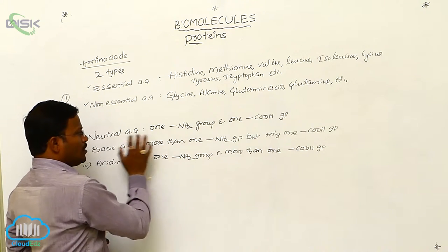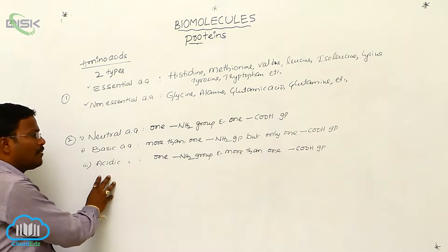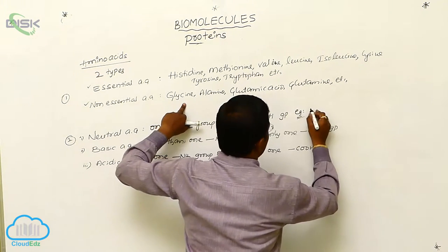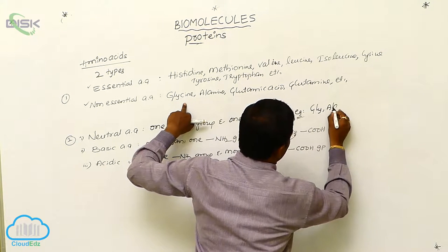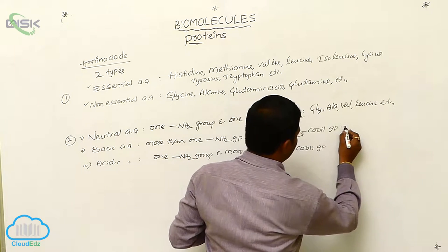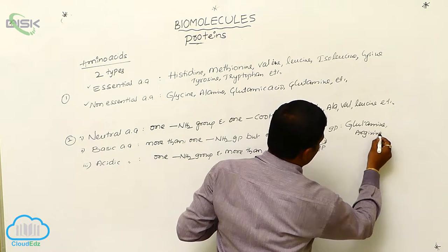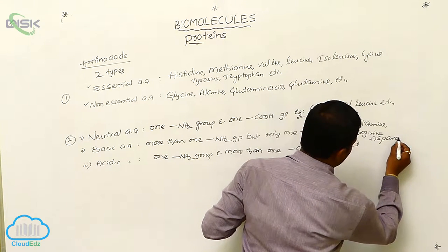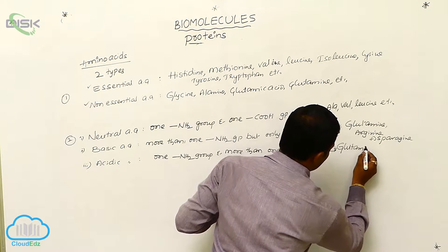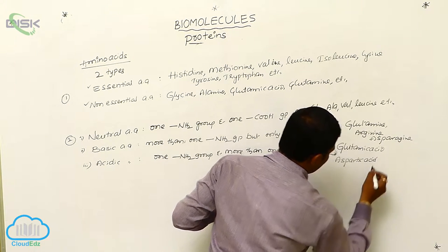If there is only one amino group and one acid group, the amino acid is neutral. If there is more than one amino group and only one acid group, it is basic. If there is only one amino group but more than one acid group, it is an acidic amino acid. Most amino acids are neutral — examples include glycine, alanine, valine, and leucine. Basic amino acids include glutamine, arginine, and asparagine. Acidic amino acids include glutamic acid and aspartic acid.